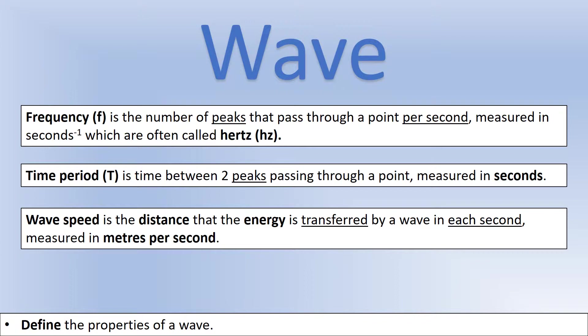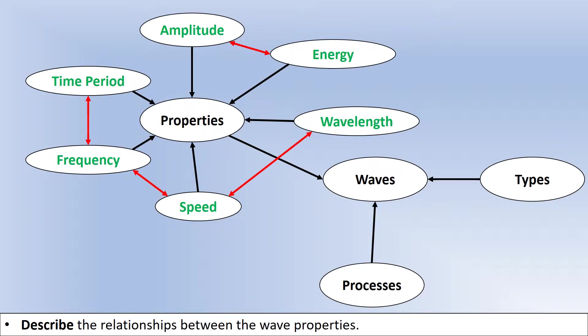The next property is time period, which is the time taken between two peaks passing through a point. To visualize this: you sit at a point and count the number of waves that go through in a second — that's the frequency. If you measure the time between two peaks, that's the time period. We'll look at the relationship between those two shortly. The final property is speed, which tells us the distance that energy is transferred each second.